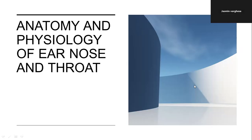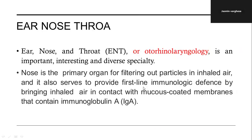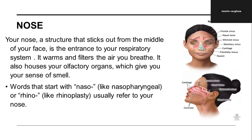Welcome back. Today we are going to discuss the anatomy and physiology of ear, nose and throat. Ear, nose and throat — or otorhinolaryngology — is an important and diverse specialty. The nose is the primary organ for filtering particles in inhaled air, and it also provides first-line immunological defense by bringing inhaled air into contact with mucous-coated membranes containing immunoglobulin. The nose is the entrance to your respiratory system; it warms and filters the air you breathe and houses your olfactory organs, giving you your sense of smell. Words starting with 'naso' or 'rhino' usually refer to the nose.